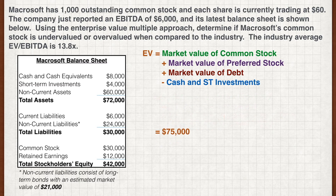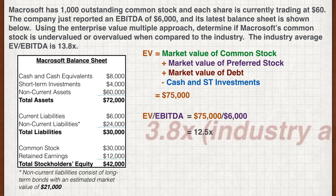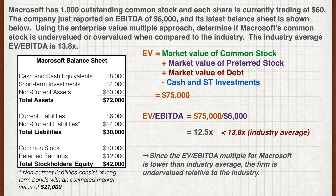So with that, we can divide it by $60,000, which is the EBITDA, and we get a multiple of 12.5 times. One shortcut is to simply compare this multiple to the industry average. Since this is lower than the industry average of 13.8 times, we may conclude that the firm is undervalued.